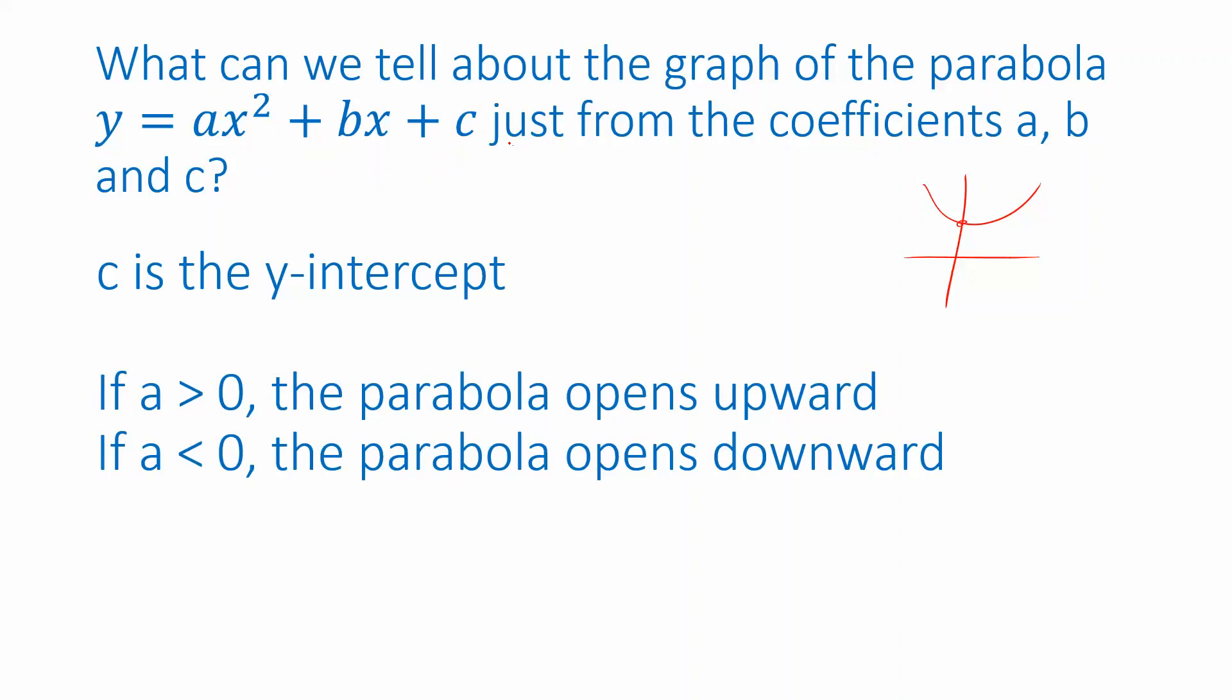Another thing you can determine is whether the parabola opens upward or downward, and you can see that just from looking at the coefficient of x². If that coefficient is positive in the general form of the parabola, then the parabola opens upward, and if that coefficient is negative, the parabola opens downward.